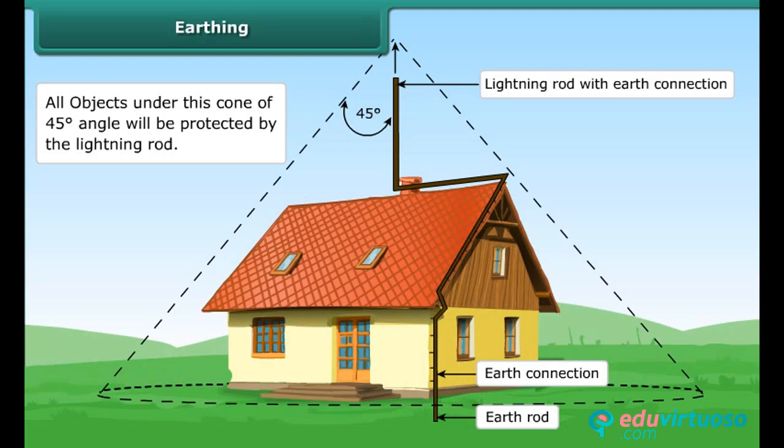The cone of protection is a term used to describe the volume of protection offered, and it provides a simple graphical tool for installing a lightning conductor protection system. The arrangement of a lightning rod showing the cone of protection is given in the figure.